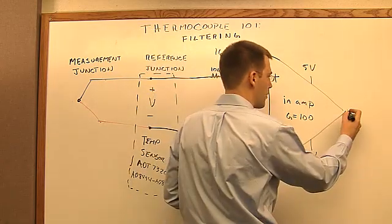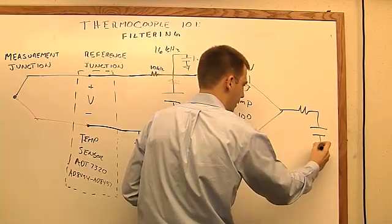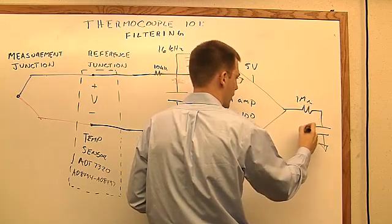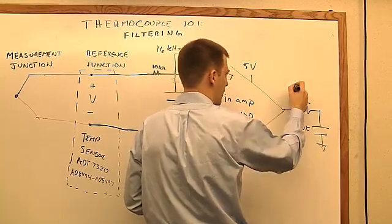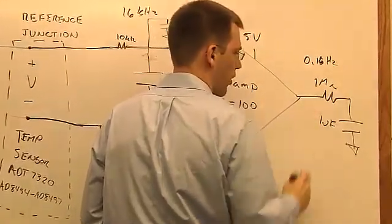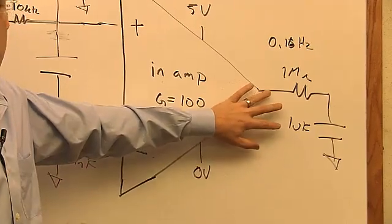So over here on your output where you have more freedom after you've done your gain, you can put a really hefty low pass filter. So for example, I could put one megaohms and a microfarad here. And this will give me something like 0.16 hertz or something really slow. You can set it wherever you want, but the main purpose of this is to get rid of 50 or 60 hertz noise.